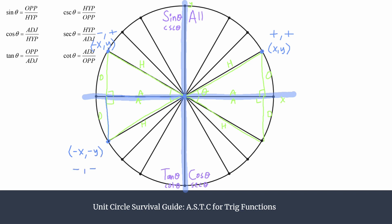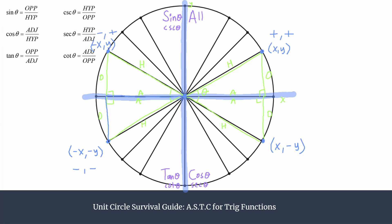In the fourth quadrant, we move in the positive direction for x and negative for y. Any trig ratio that involves the y value — which is the opposite — is going to be negative, so sine, tangent, and their reciprocals are negative. But cosine and secant are positive because they rely only on the adjacent and hypotenuse sides for the ratio — positive x, negative y. ASTC quickly tells you which trig functions and their reciprocals are positive in a particular quadrant.